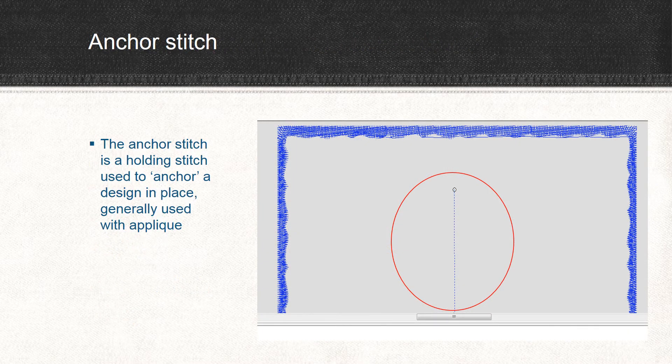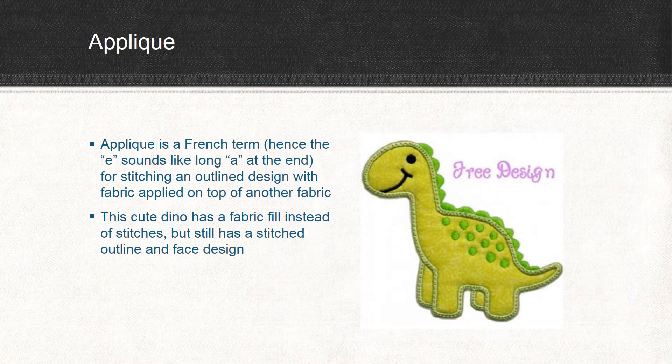The anchor stitch is a holding stitch that's used to anchor a design in place and is generally used with applique. Applique is a French term — that's why the E at the end sounds like a long A. It's for stitching an outline design with fabric applied on top of another fabric. If you look at the cute little dinosaur design here, this is an applique because it's a fabric fill instead of a stitch fill, but he still has a stitched outline and a little face design.